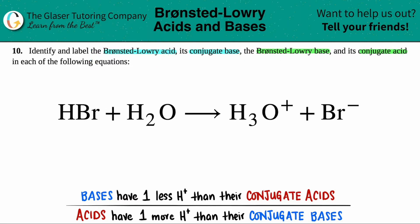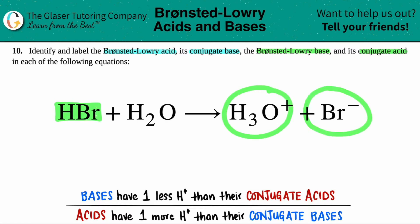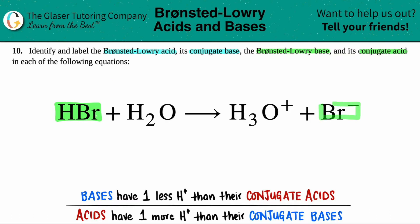The easiest way to go about this is to first pick out the pairs. I like to work from left to right, so I'm just going to pick HBr first. Which species on the product side goes with HBr? The same elements have to go together. So if this one has a bromine, this one is the pair that corresponds with HBr.